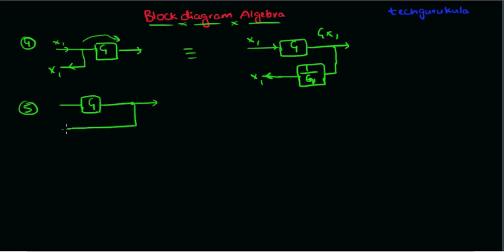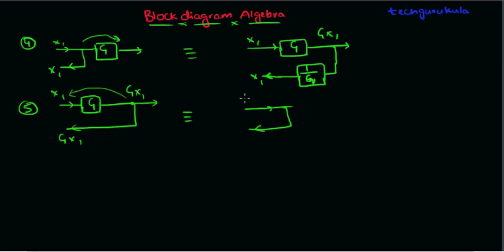The fifth rule: if we have a takeoff point after a block with gain G — sampling G·x1 — and we want to shift this takeoff point before the block, the tapped signal at the new position will be x1. But we need G·x1, so we place a block with gain G in that branch so that x1 times G gives G·x1, which is the equivalent figure.